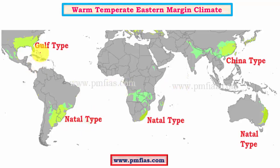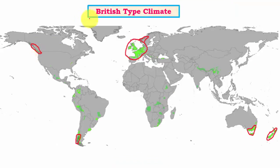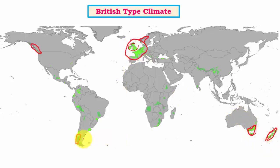British type of climatic regions is the most favored for human survival. It includes regions of United Kingdom, Germany, France, certain parts of southern Australia, Tasmania, New Zealand, southern parts of Chile, and British Columbia.